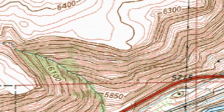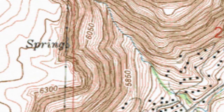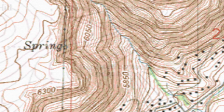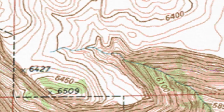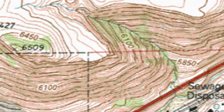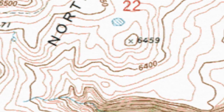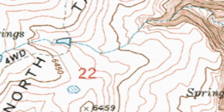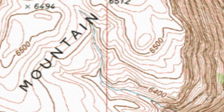We know contour lines separate land of higher elevation on one side and lower elevation on the other, and that the elevation difference between these lines stays constant — it's the contour interval. So when we see contour lines that are more closely spaced, the land is changing elevation more rapidly over a horizontal distance: it's steeper. Flatter areas have contour lines more widely spaced. A regular slope has evenly spaced lines versus an irregular slope with differently spaced lines.